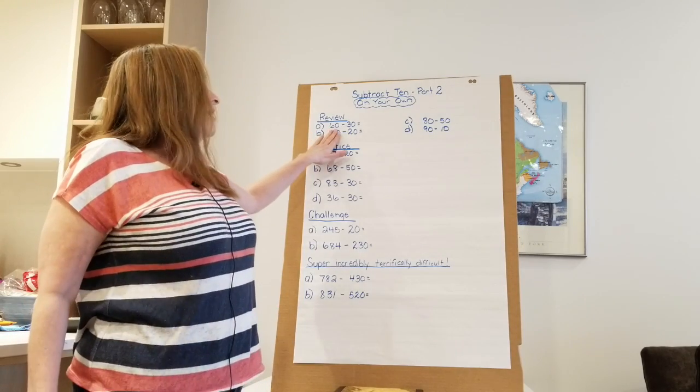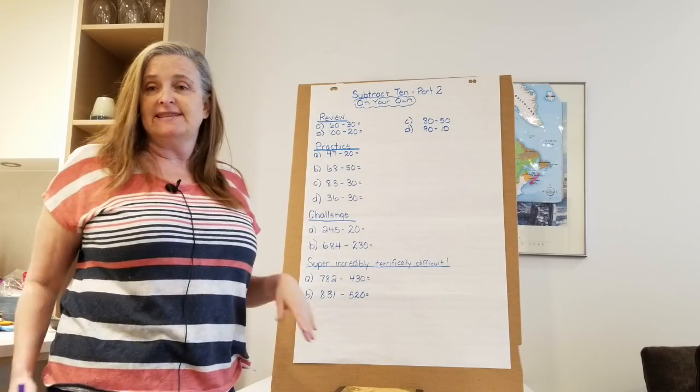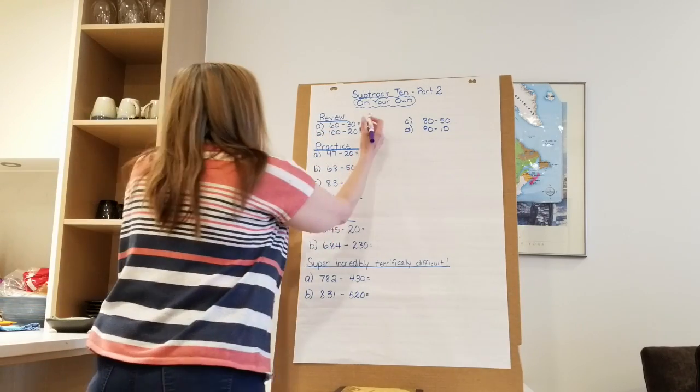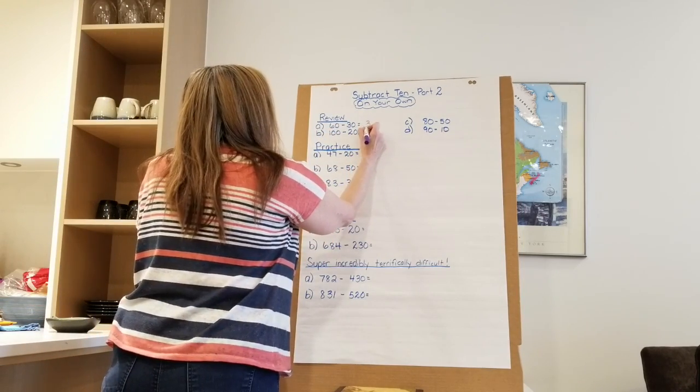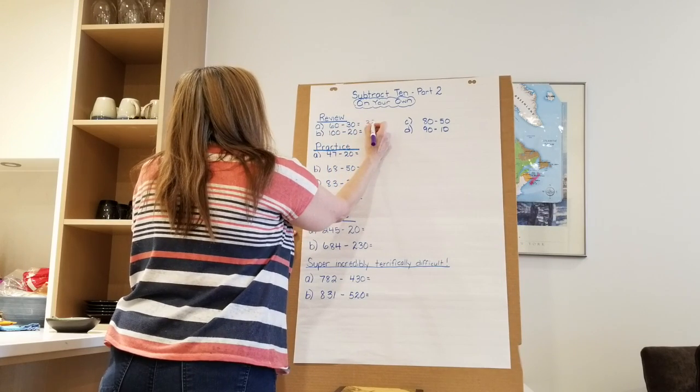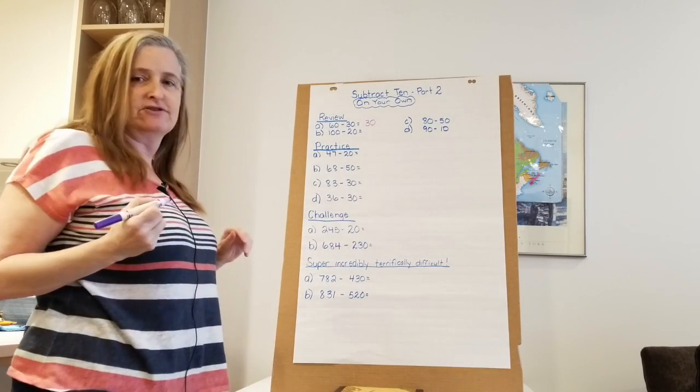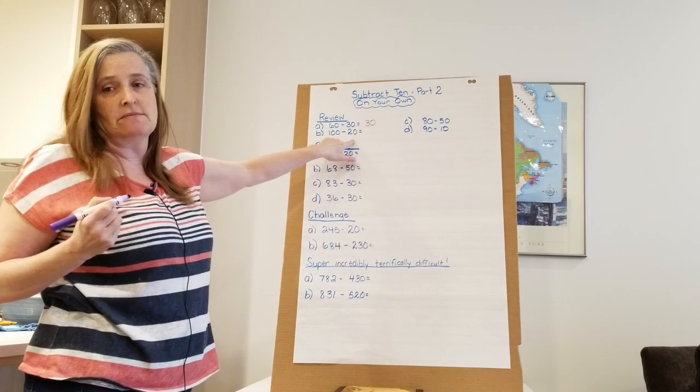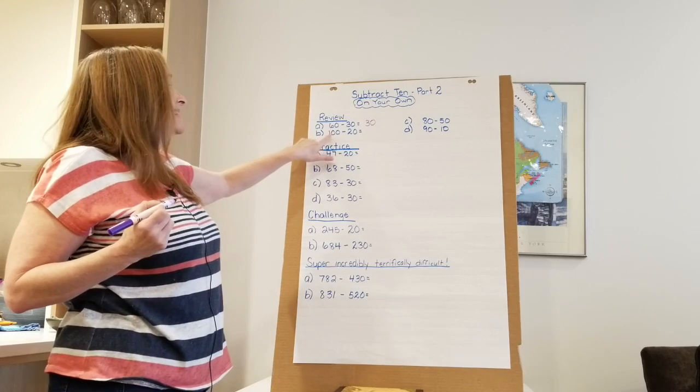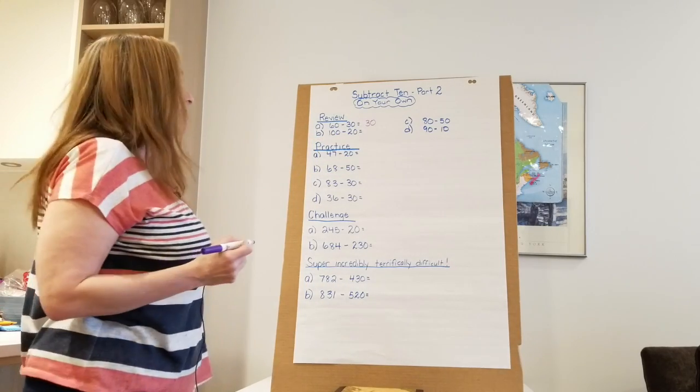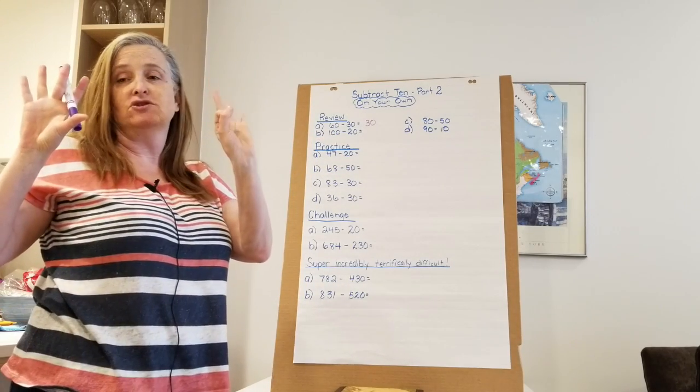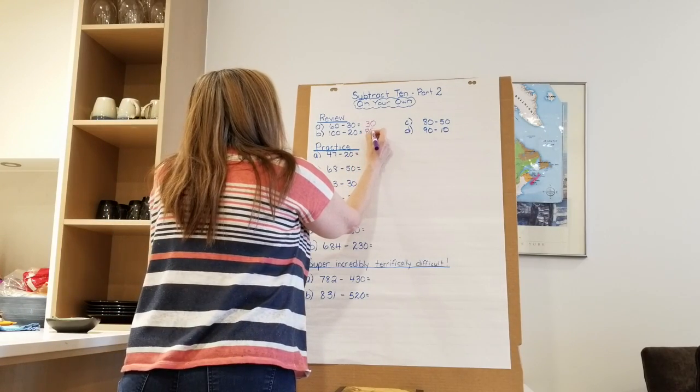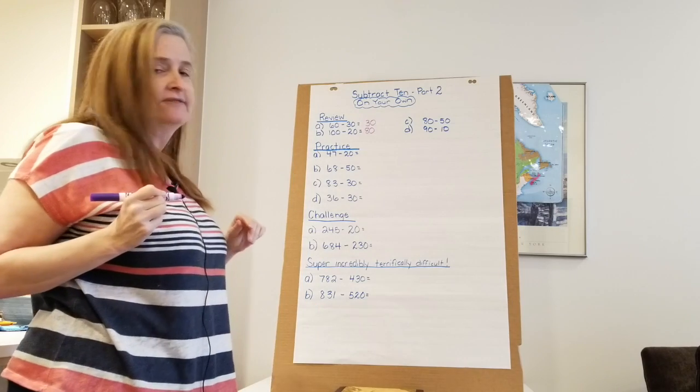All right, starting with the review. I have 60 take away 30, the same as 6 tens take away 3 tens. I know 6 take away 3 is 3, just like 3 plus 3 is 6, and 3 tens is 30. Give yourself a checkmark because I know you got that one right. All right, we're on to 100 minus 20. That's like 10 tens minus 2 tens, and I know that 10 take away 2 leaves me with 8. So I have 8 tens, which is 80.